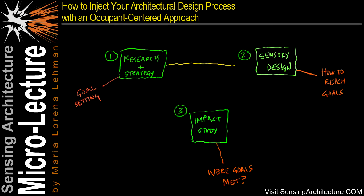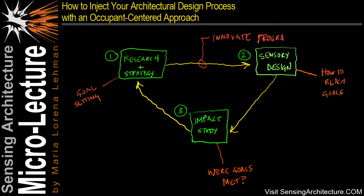Now between each of these steps are key innovation points. For instance, between steps one and two you can innovate your project programming phase. By better understanding your research and strategy methods and sensory design methods, your project programming phase will be much better suited to make innovative advancements.